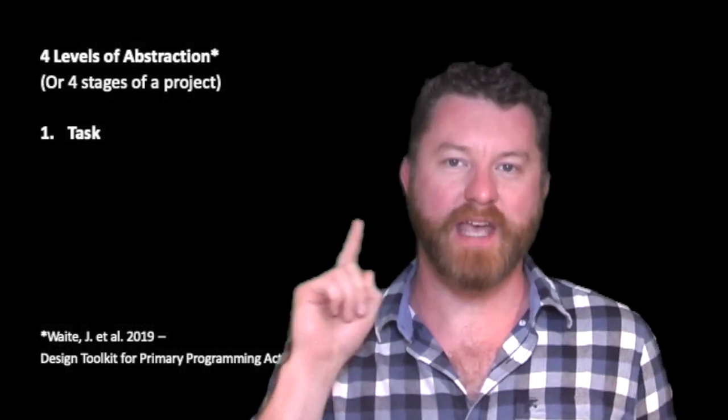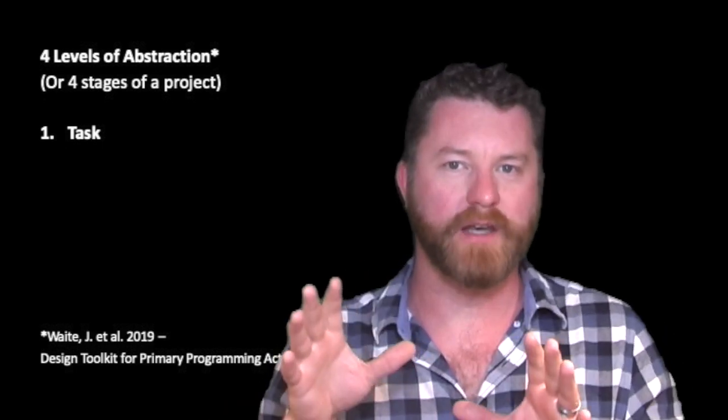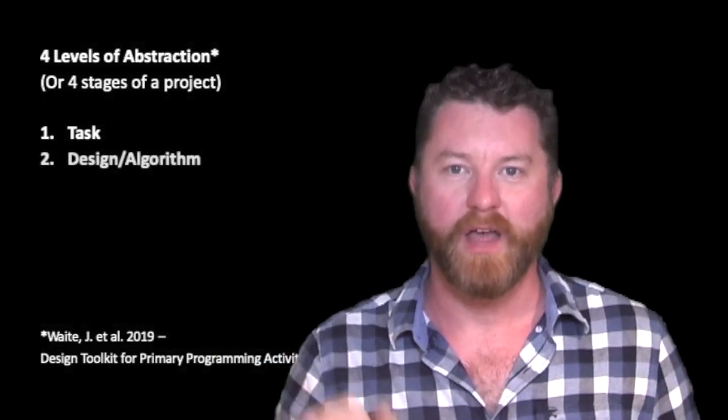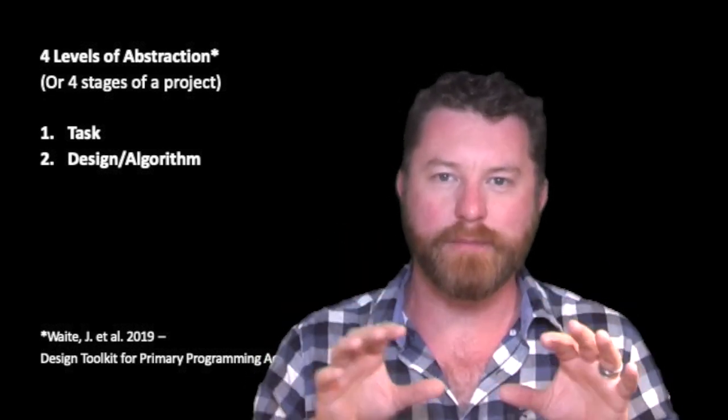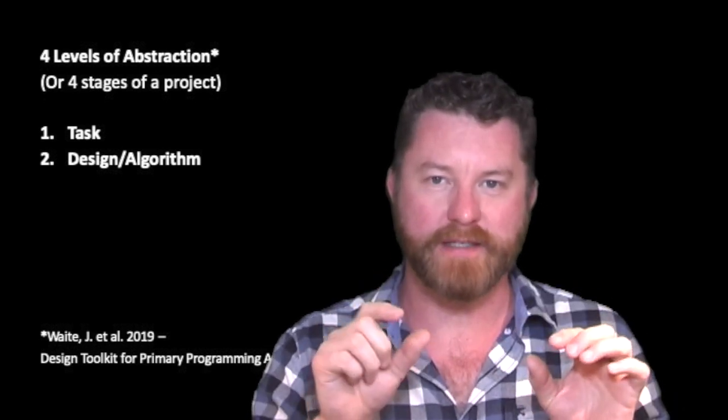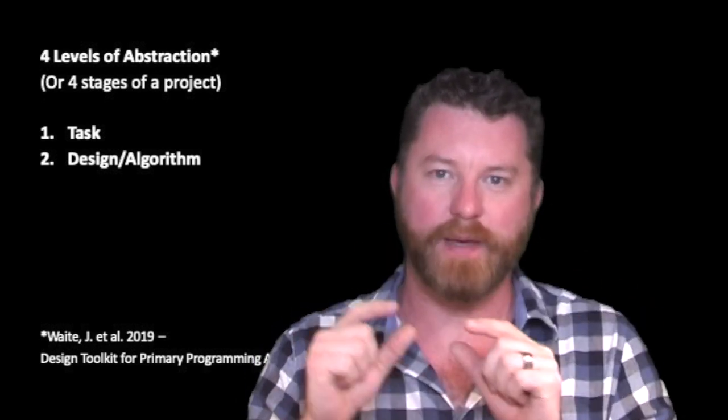We're going to follow the four levels of abstraction, or the four stages of a project, when we do these lessons. Stage one is the task — this is where we define what problem we're going to solve, or what game or activity we're going to make. Stage two is our algorithm and design stage, where we decompose the main problem into smaller pieces and explain exactly what each piece is going to do, so that we can design it before we implement it on our computers.